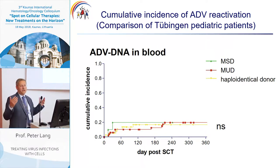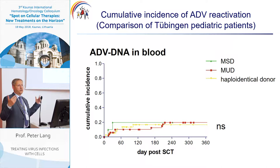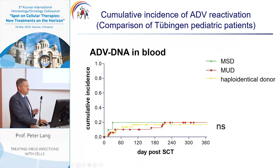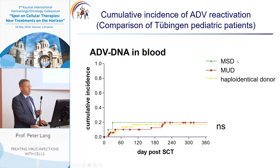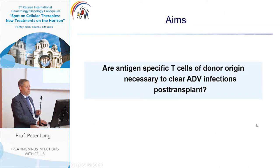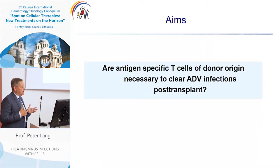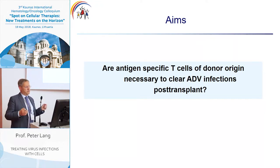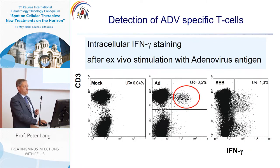This is the cumulative incidence of ADV reactivation in our own Tübingen pediatric patients. I mainly focus on children because I'm a pediatrician, but this program also includes adults. We have an incidence of about 20 percent, independent from the type of donor — matched sibling donor, matched unrelated donor, or haplodonor. So our first question was: are antigen-specific T cells of donor origin really necessary to clear an ADV infection post transplant?